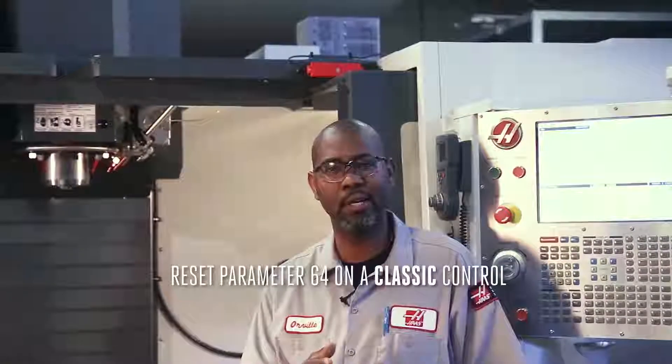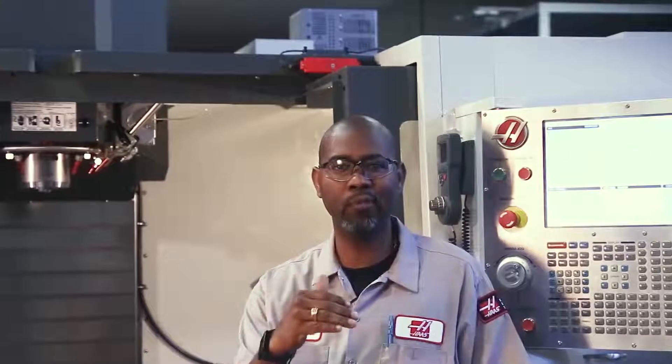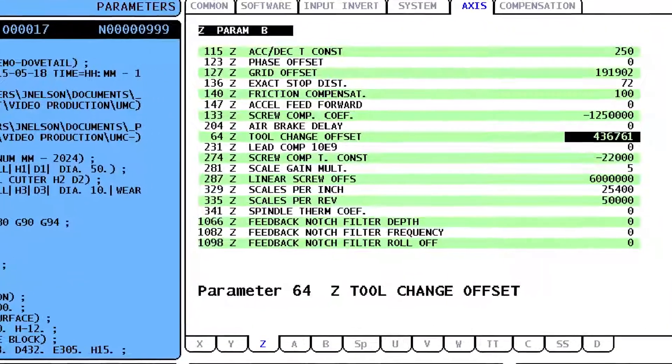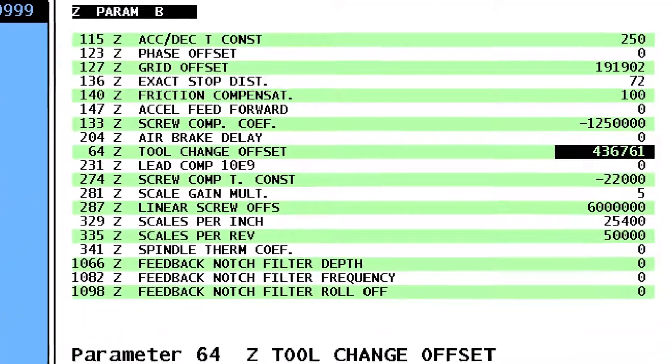The Z axis tool change offset is the position near the top of the Z travel that the spindle head moves to before either the double arm insert or remove the tool from the spindle. This value does not change unless a component in the machine has been replaced.